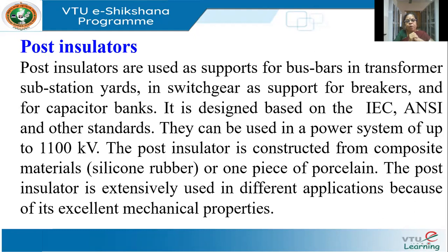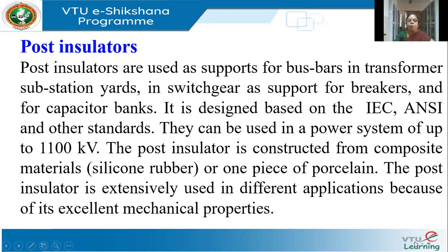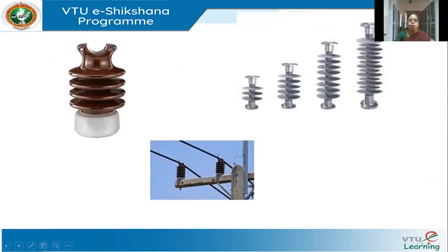Your pin type insulator is clamped — it has a pin on the top by which it will be held at the cross bar of the pole. The post type insulators are clamped to the line. Can you see this clamping, how they are clamped? There's a groove on top and there will be a metallic clamp at both ends.